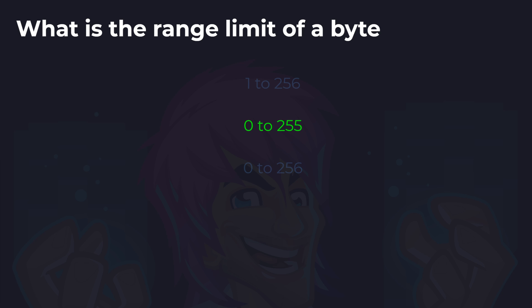There are 256 possible options due to a byte having 8 bits. And 0 being a value in code — a possible option — the 256th option, if you think of it that way, is the 0. That's why we don't get to 256, because 0 is also an option.